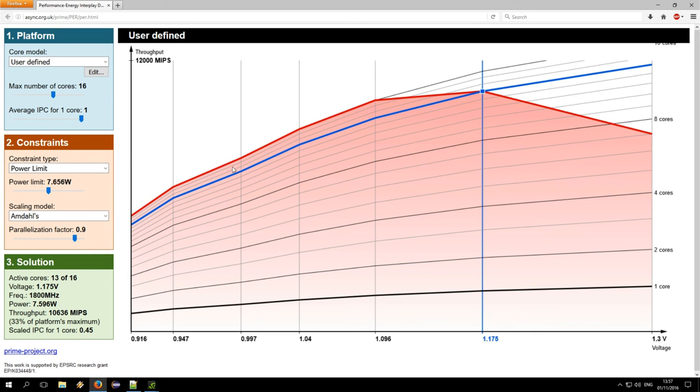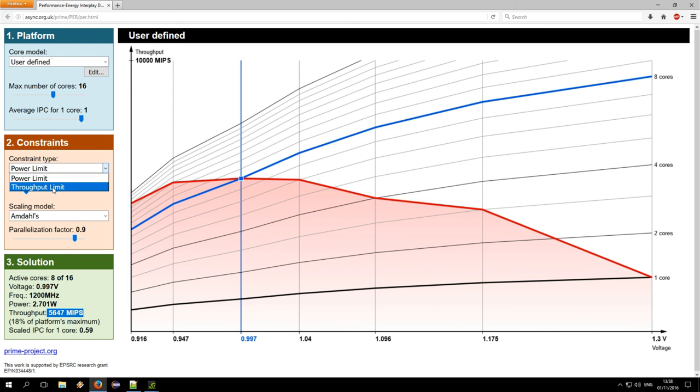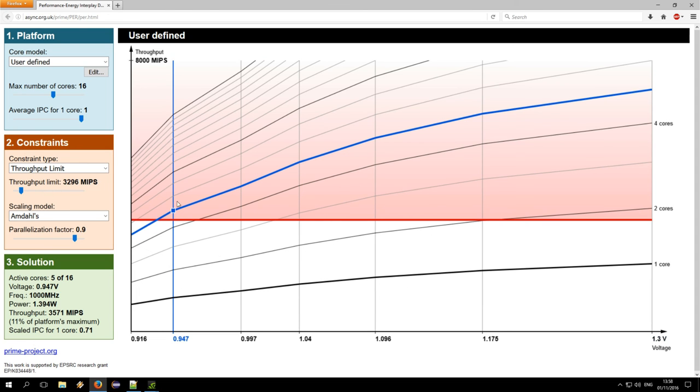Once you have selected the platform, you can specify your maximum power constraint, for which the tool will calculate the best operating point that would give the maximum performance. Alternatively, you can specify a minimum throughput constraint, and the tool will give you the minimum required power.